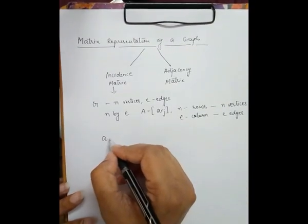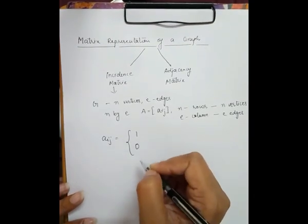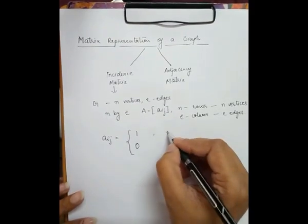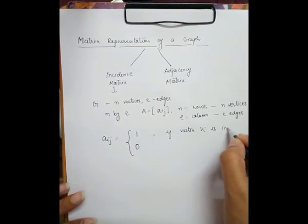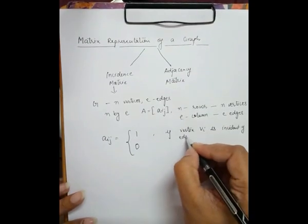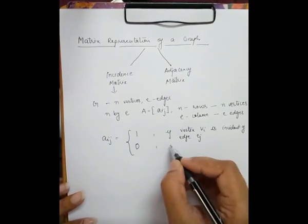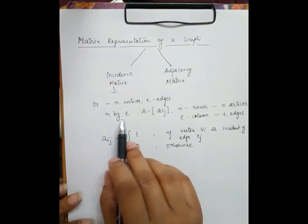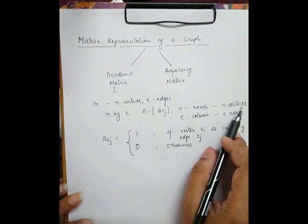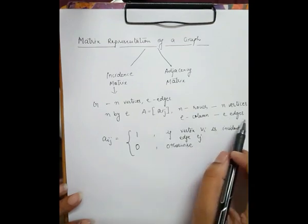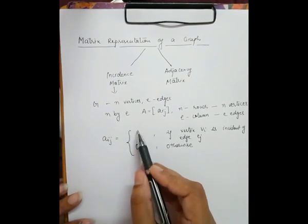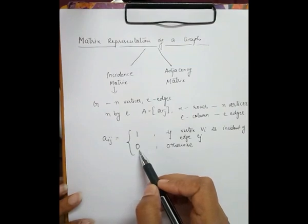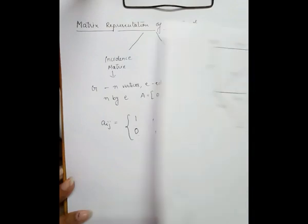We find the matrix entries where a_ij equals 1 or 0. This incidence matrix has either a value of 1 or 0: if vertex v_i is incident on edge e_j, then a_ij equals 1; otherwise we take the value as 0. So in this incidence matrix we take an n by e matrix where n represents the number of rows or number of vertices, and e represents the number of columns or number of edges.